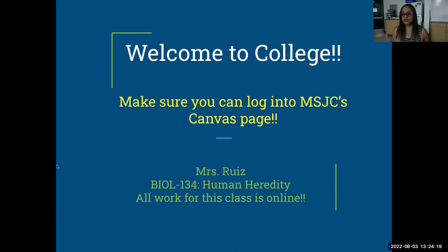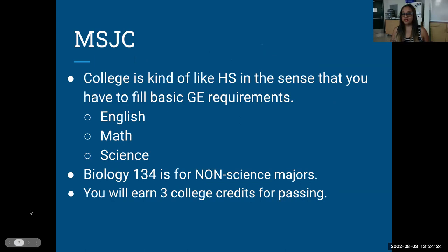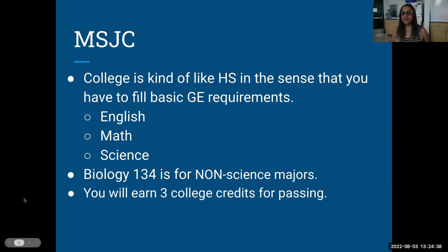Some of you have taken dual enrollment classes before, and some of you have not. College is kind of like high school in the sense that you have to fill basic GE requirements: English, math, science. Biology 134, the one you're taking right now this semester, is for non-science majors. You will earn three college credits for passing. They are all lecture units — there is no lab to this class.